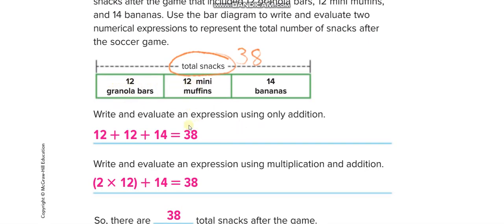Here, the first addition: 12, 12, 14—add them. And the second one, two 12s, so 2 times 12 plus 14 equals 38.